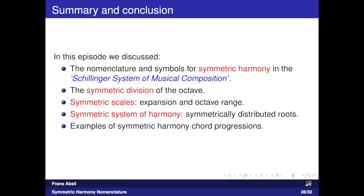In this video episode I discussed the terminology in the Schillinger symmetric system of harmony. I explained the background behind the notation and symbols used when dividing the octave into equal segments, yielding a system with multiple tonics and multiple roots. I created and discussed a number of examples of symmetric scales and symmetric harmony chord progressions. Together with the companion episode about diatonic harmony nomenclature, this should help you get familiar with the Schillinger notation. Thanks for watching!